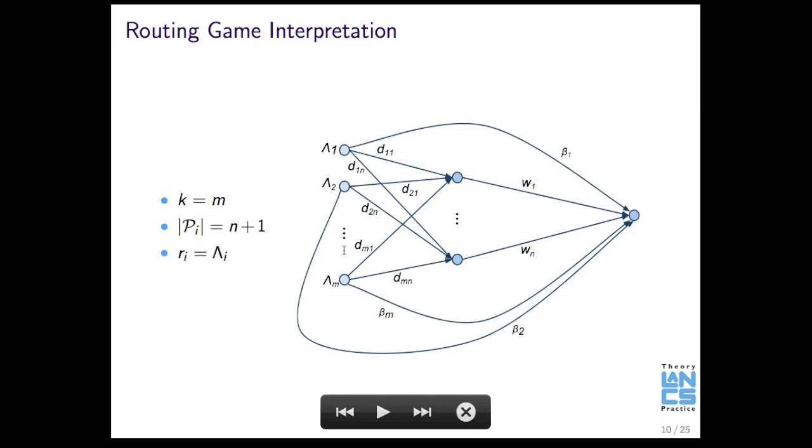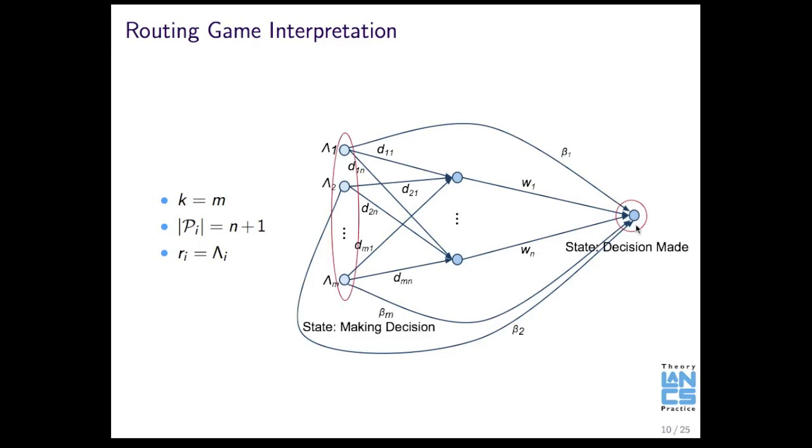But, of course, we've only got a certain amount of, we have these M sources, and we've only got one sink. And that's because a sink doesn't necessarily represent a hospital. It represents a change of state. So, you're in the state of having to make a decision, and you go to the state of the decision being made.